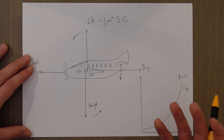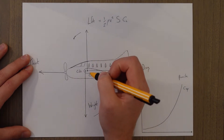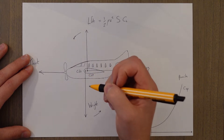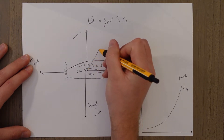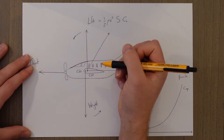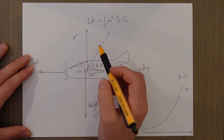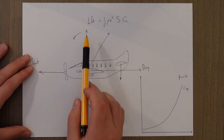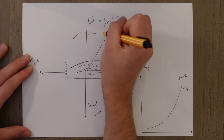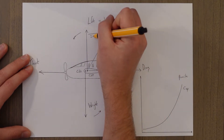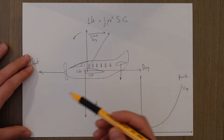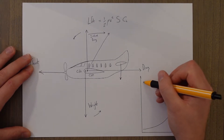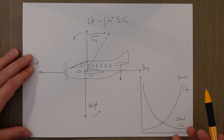Induced drag is induced by the creation of lift. When we create lift, the force that is created by the pressure differential doesn't come off straight up — it actually comes off at a bit of an angle. We can then break this resultant force down into two components: the component that directly opposes the weight is called the lift, and there's a horizontal component which is our induced drag. This induced drag is inversely proportional to the aircraft's speed squared, and the value of induced drag can be given a coefficient which is CDI.